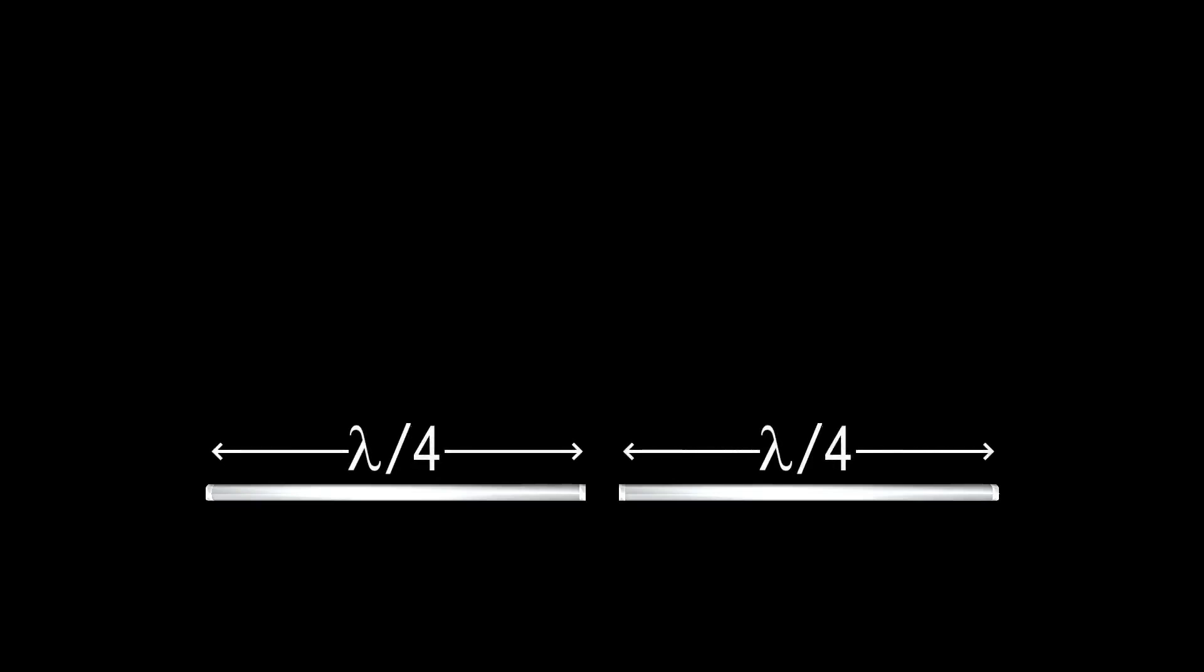A regular dipole antenna has two conductive elements, typically a quarter wavelength long each, spaced with a small gap. This makes the entire antenna about half a wavelength long.